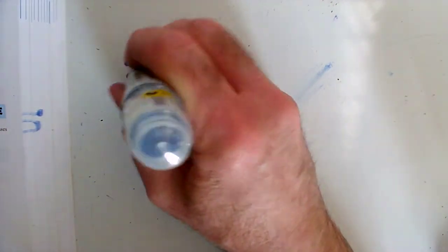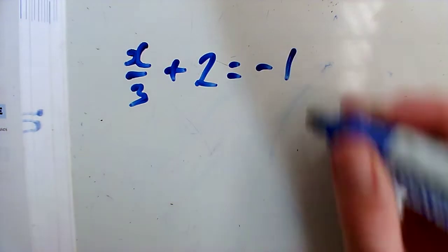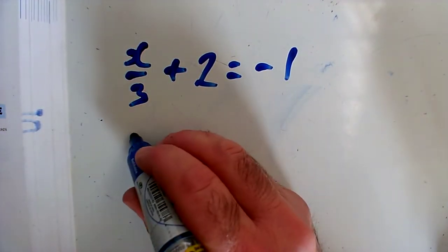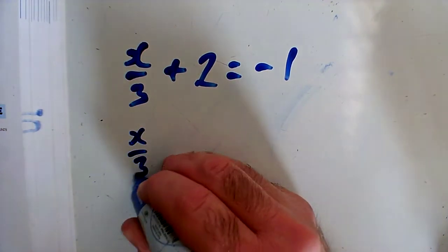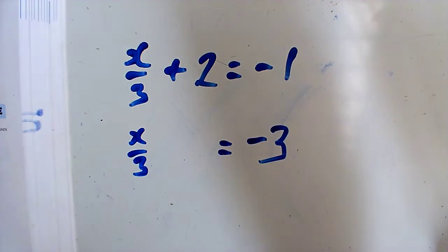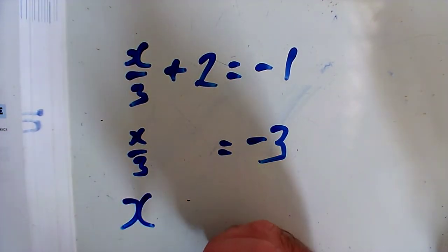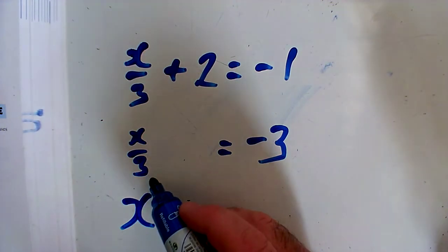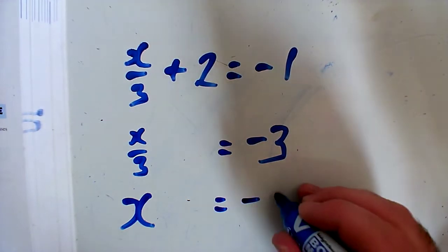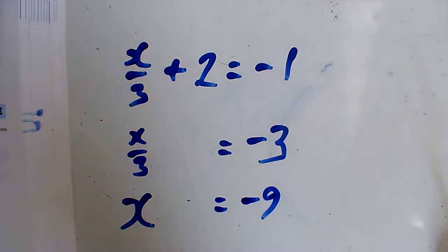Question G: x over 3 plus 2 equals minus 1. I'm going to get rid of the 2 to get closer to the bit with x in, so taking away 2 from both sides, x over 3 equals minus 3. Now I want a whole x, so I multiply both sides by 3 to get rid of the fraction, giving x equals minus 9.